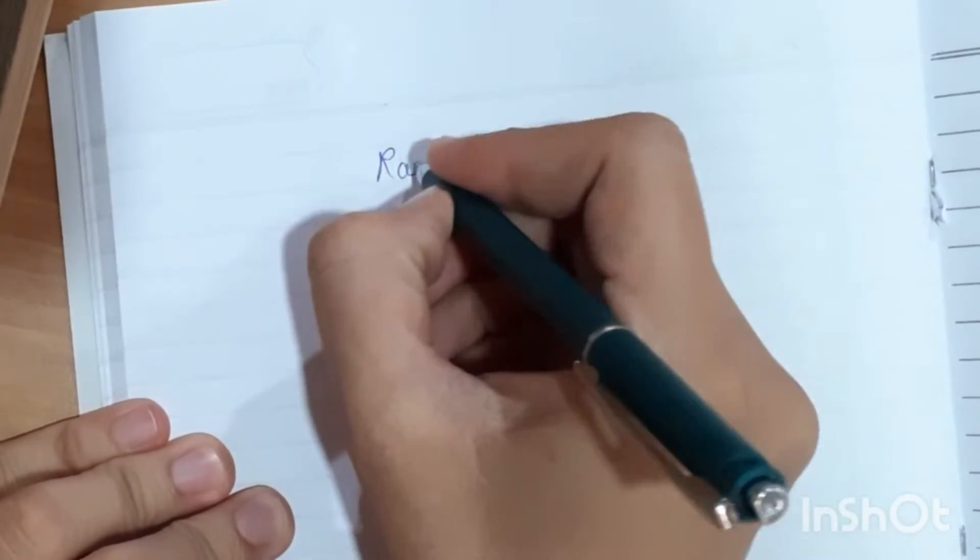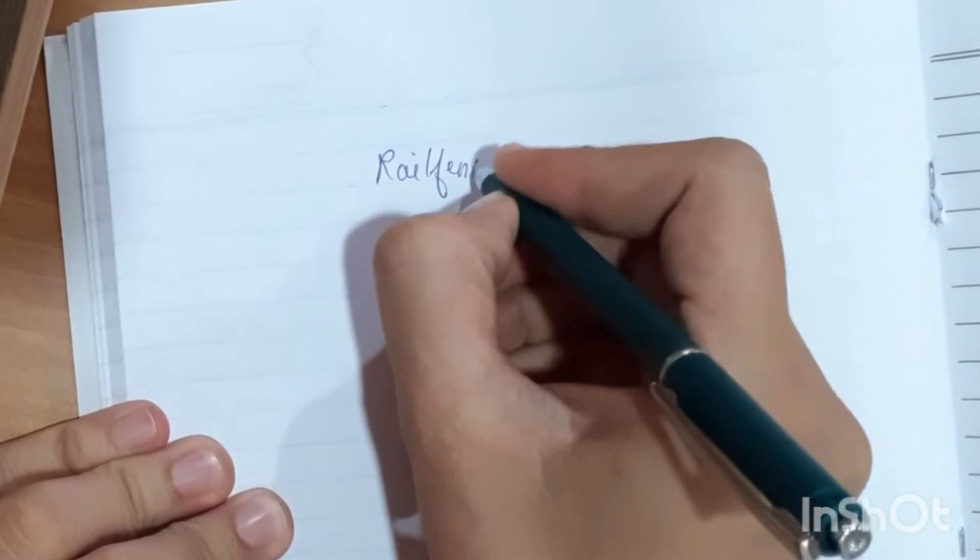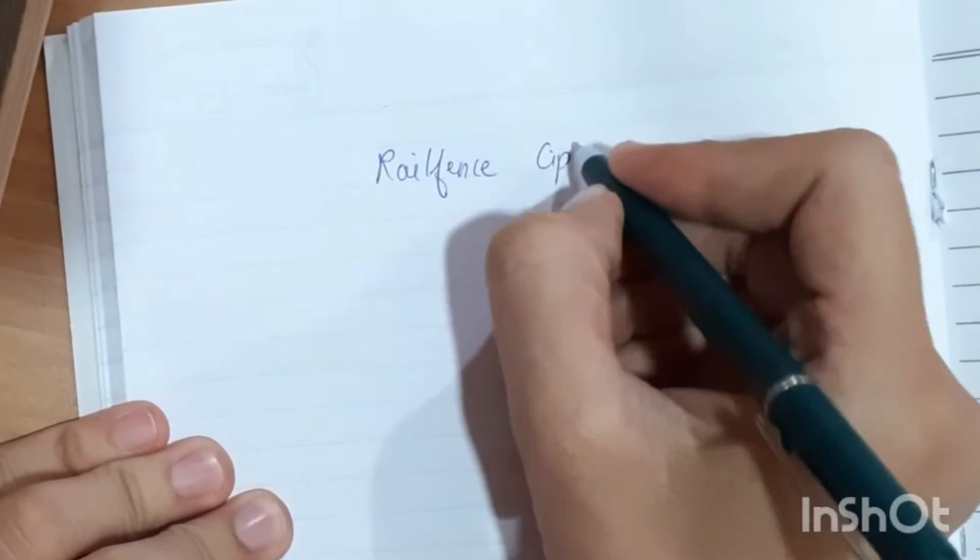Hello friends, welcome to Learn IT Today. The technique we will see in cryptography is the rail fence cipher technique.